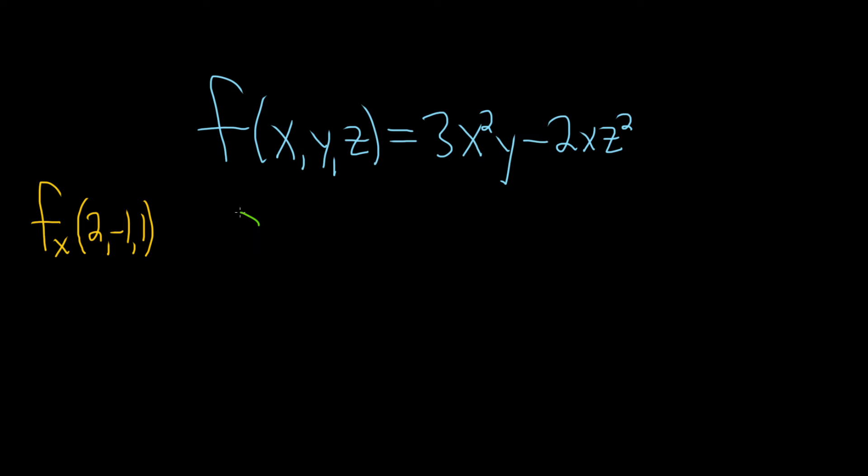So let's go ahead and find the partial with respect to x. When we compute partial derivatives, in this case with respect to x, we treat all of the other variables as constants. So in this case, the y here is a constant, and so is the z. So the z squared is constant. Everything is constant except x.